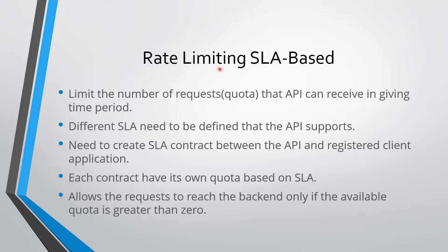SLA-based rate limiting policy limits the number of requests that an API can receive in a given time period. To add this SLA-based rate limiting policy, we need to define different SLAs that the API needs to support. Once the SLA has been defined for the API, we need to create a contract between the API and the registered client application, and this contract will be based on the SLA.